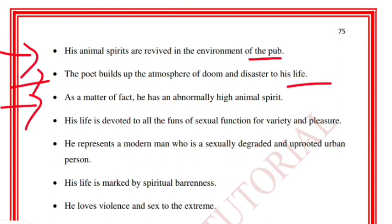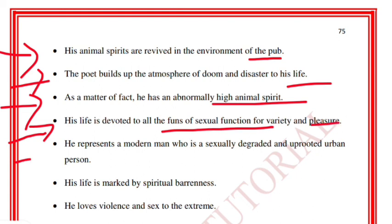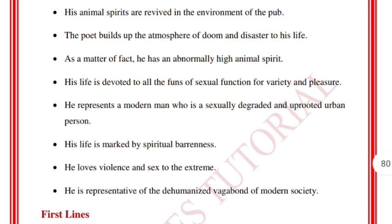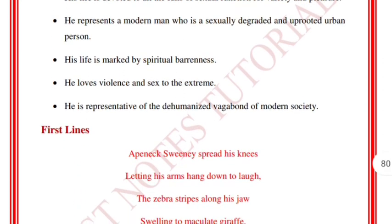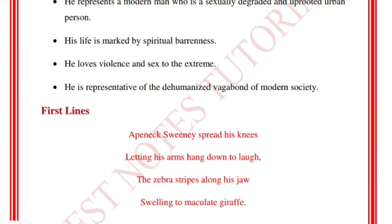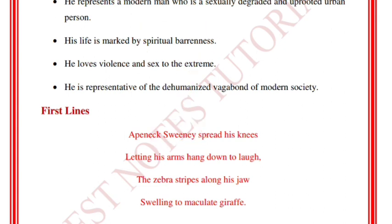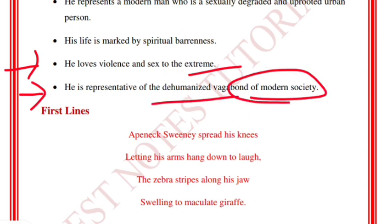Sweeney has an abnormally high animal spirit; his life is devoted to all the forms of sexual function, variety, and pleasure. He represents a modern man who is sexually degraded and an uprooted urban person. His life is marked by spiritual barrenness; he loves violence and sex to the extreme. He is representative of the dehumanized vagabond of modern society — Sweeney represents the dehumanized person of modern society.